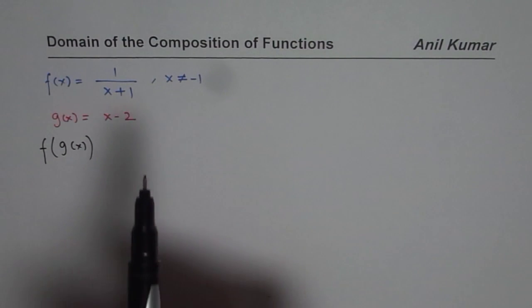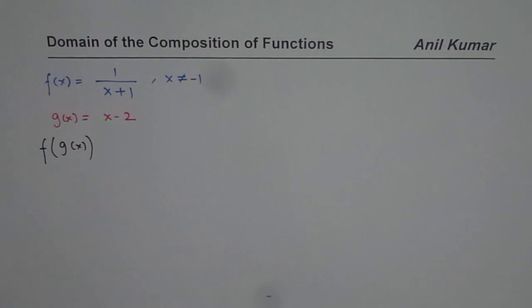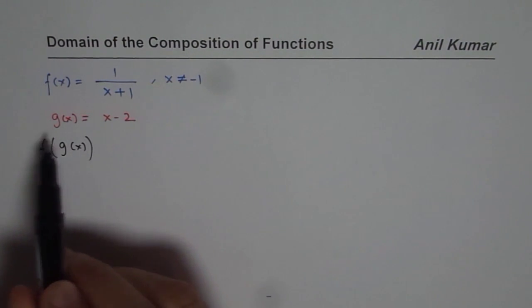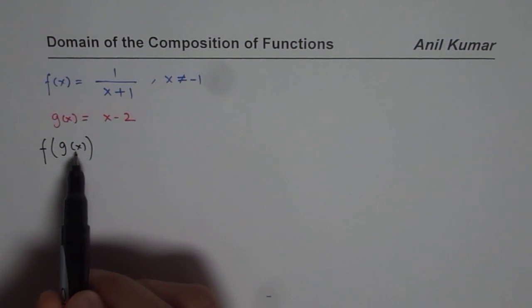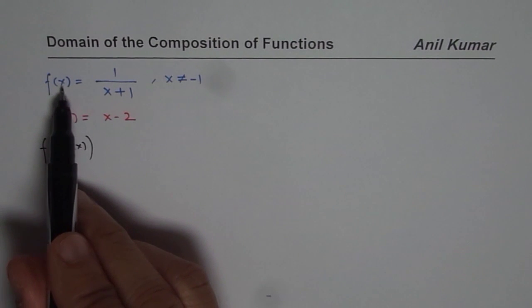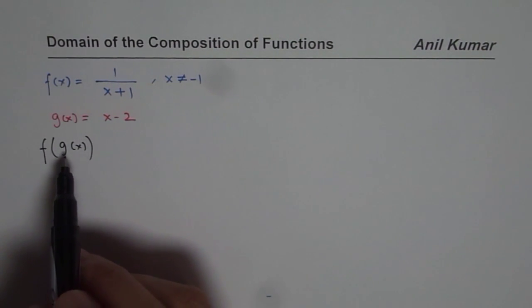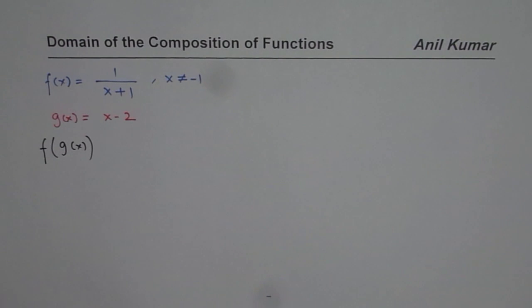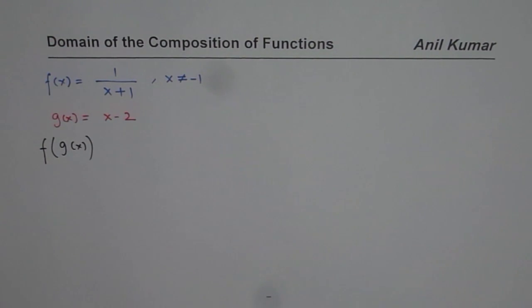Some of you might say that minus 1 should be part of the domain restriction. You will be surprised to see that in the final answer we may not get that. The domain of this function is basically determined by the domain of g of x itself. The restriction comes from the domain of g of x, and then the range of g of x becomes the domain of f of x, which could lead to further restrictions. So in most composite functions, the domain is not always restricted by just one function alone.